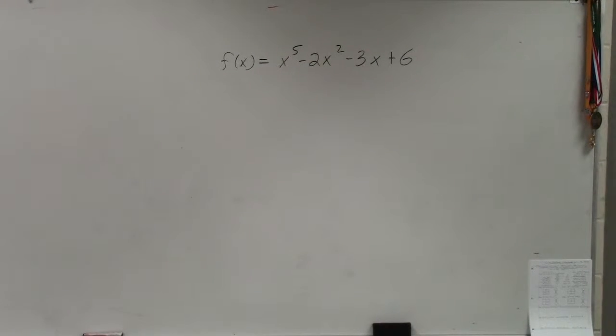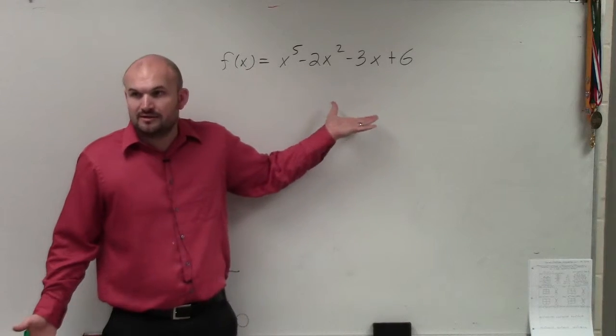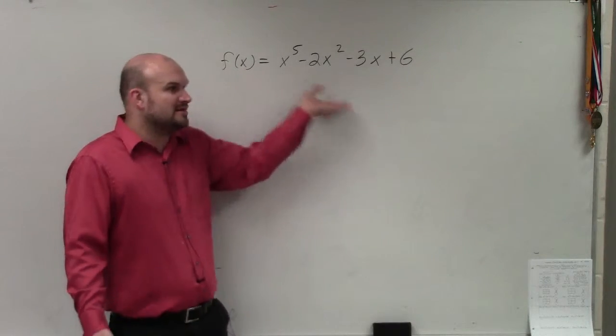And why knowing the number of rational zeros was important is because we wanted to find which ones were the zeros. So the rational zeros, we'd plug them in and we'd find the zeros.